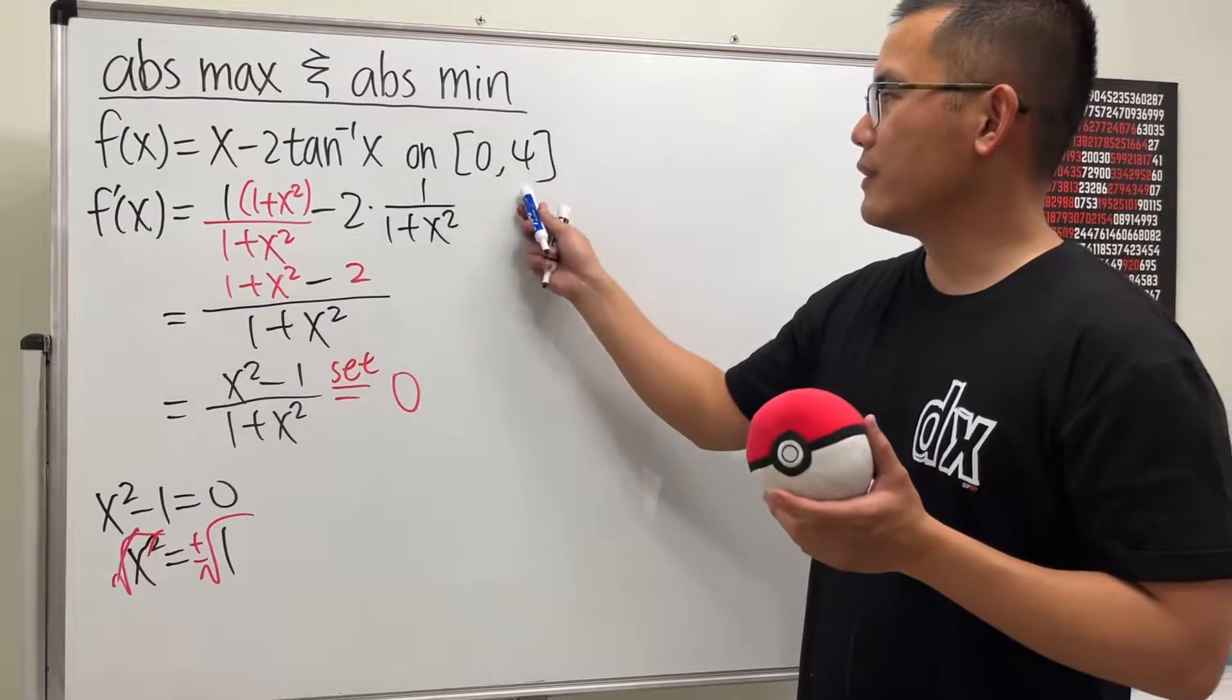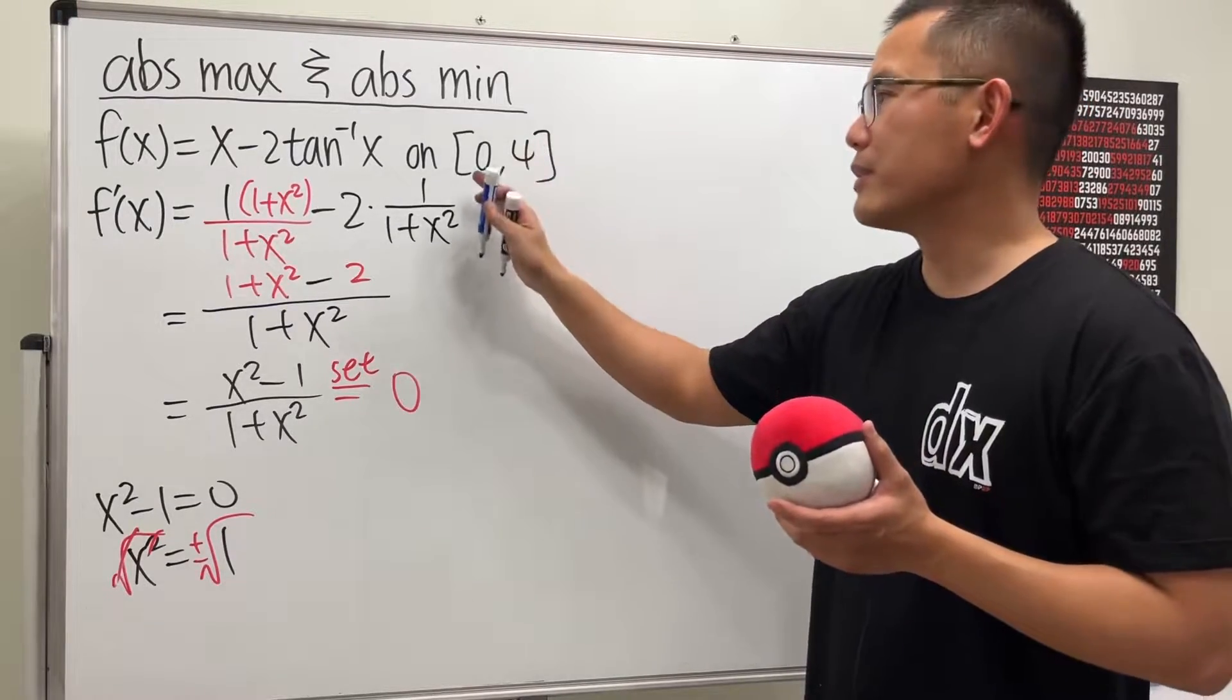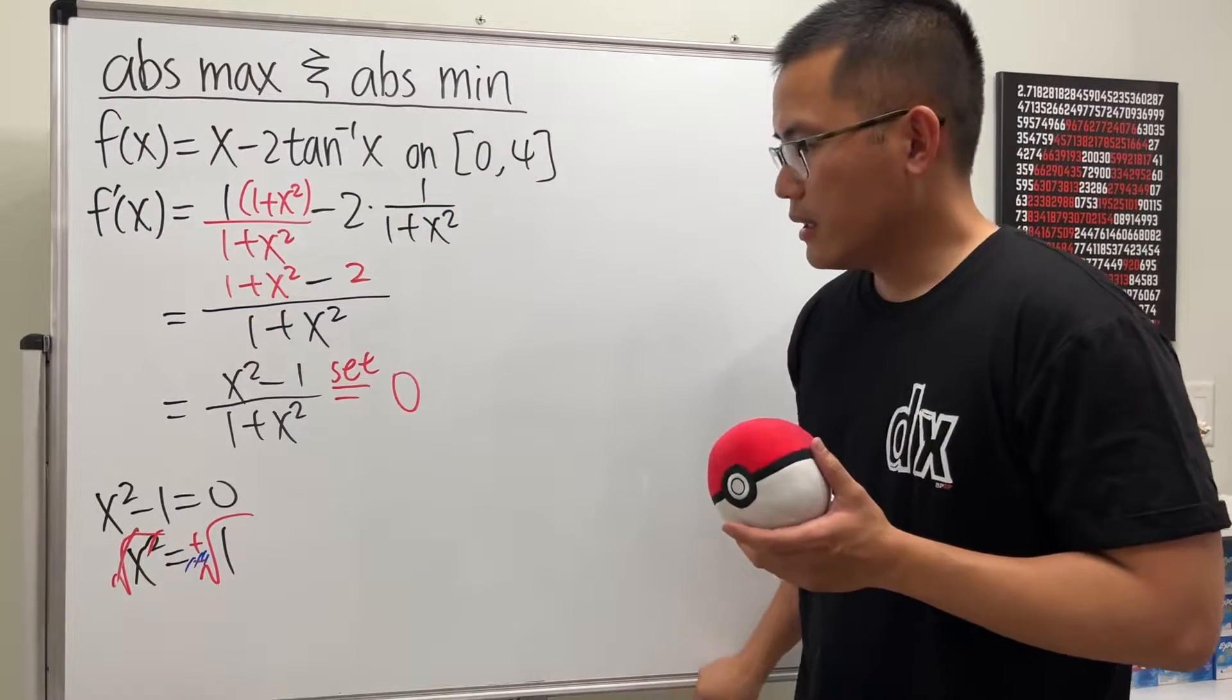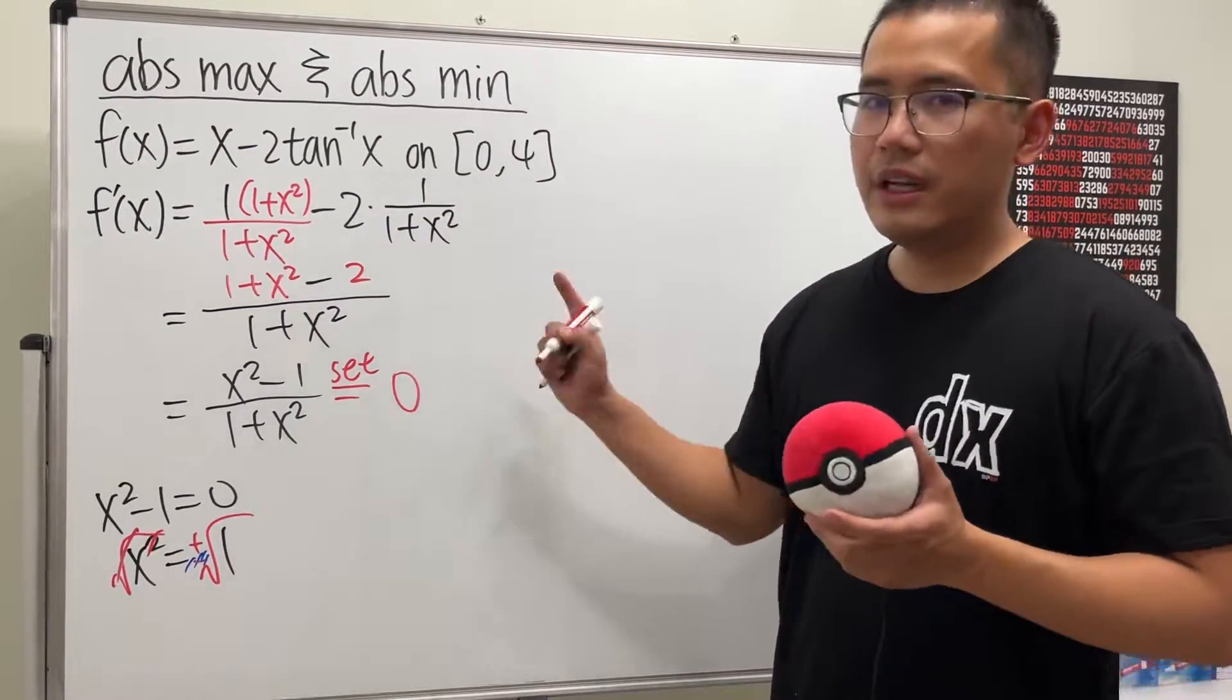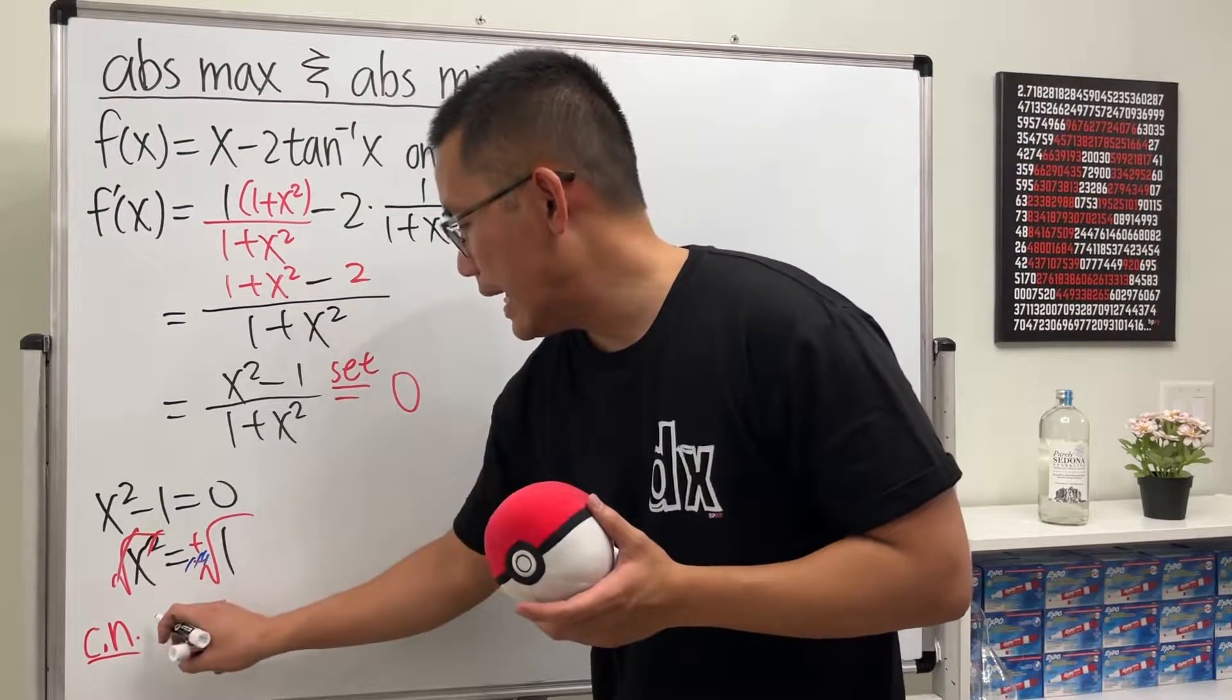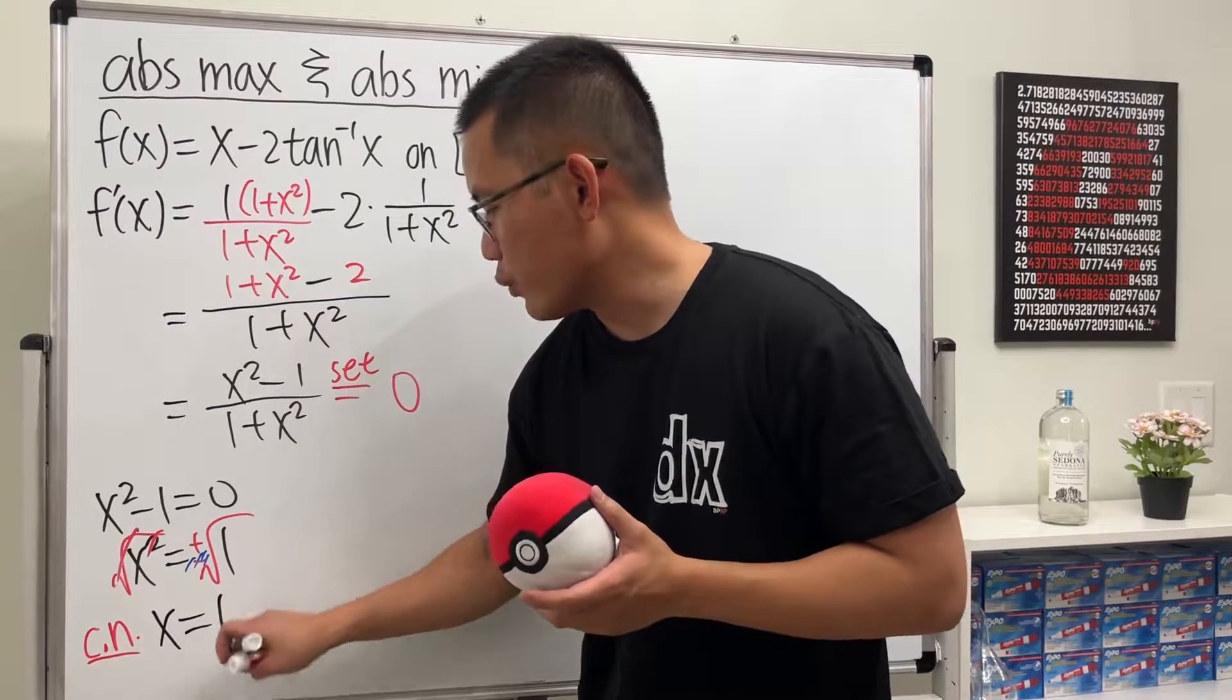However, take a look at the interval. We just care about the numbers from 0 to 4. So don't need to worry about the negative. Therefore, the only critical number that we care about is x equals square root of 1, which is just 1.